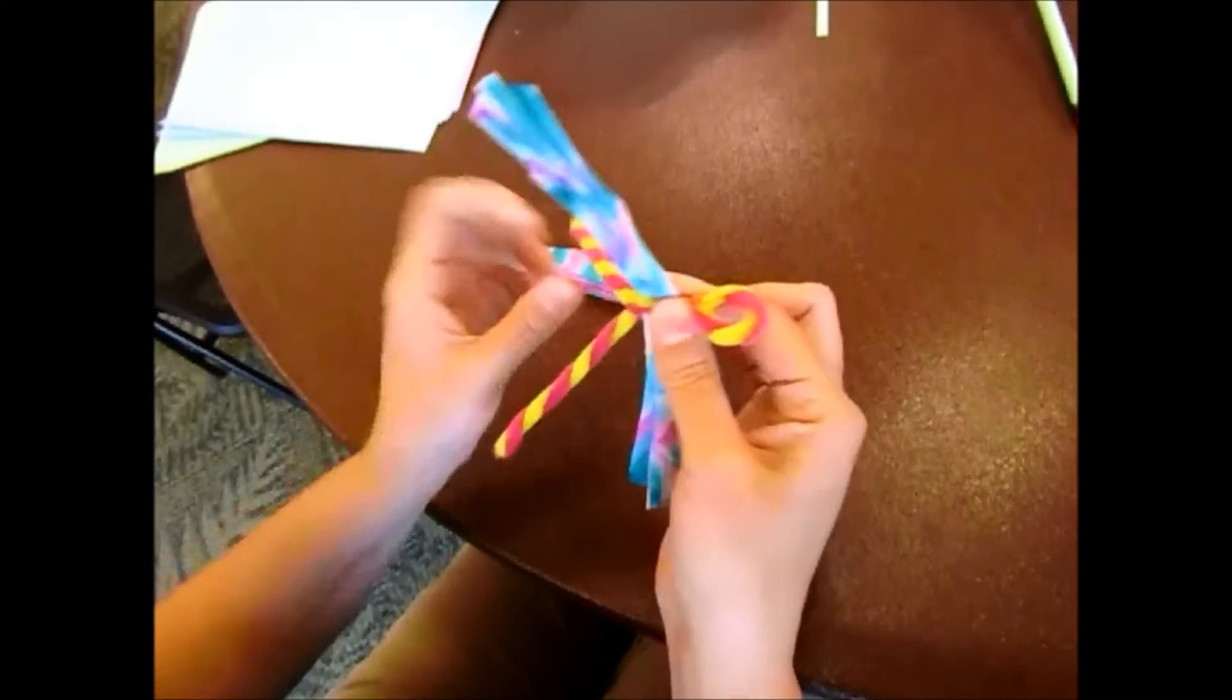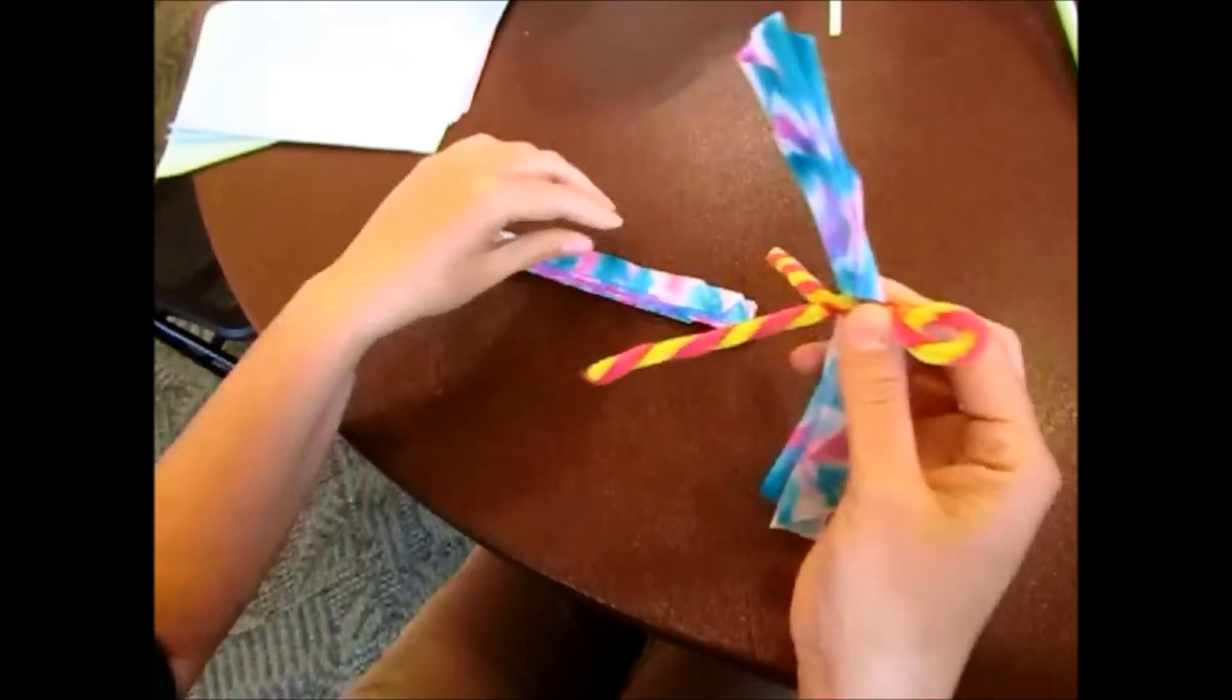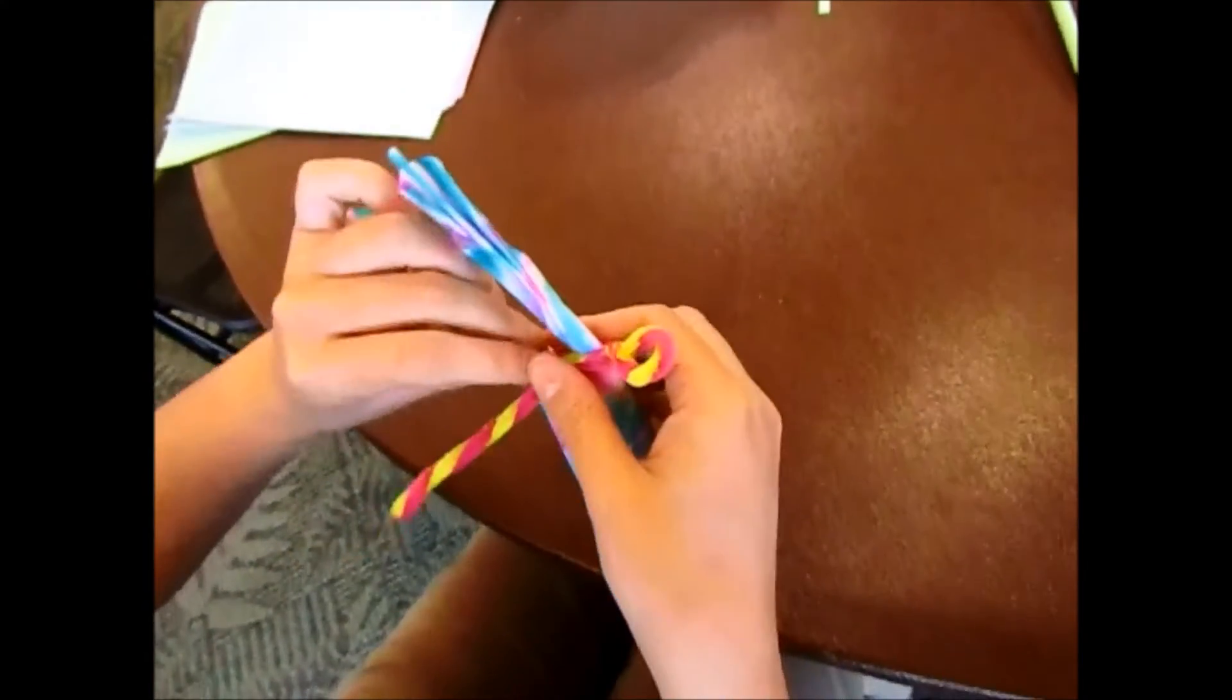holds it nice and straight. Now you're going to go ahead and take the other wing and slip that in between the two pipe cleaners.